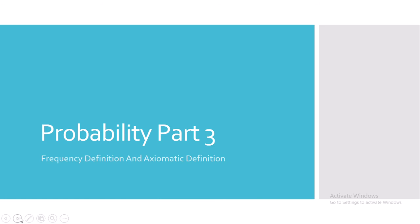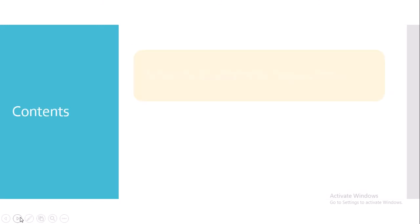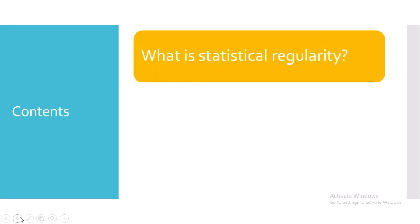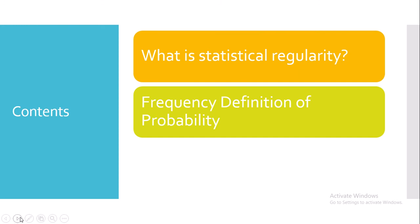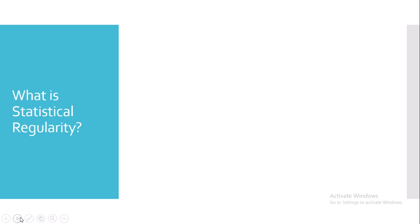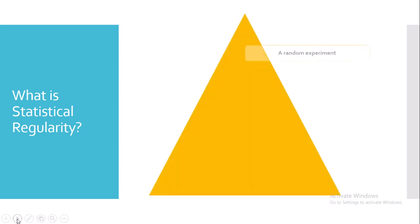Today we will study about the frequency definition and axiomatic definition of probability. Before moving on to the frequency definition, we will study what statistical regularity is all about, and then we will move on to the frequency definition and the axiomatic definition of probability.